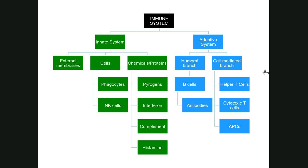Because some things are able to get inside of cells, we also need a cell-mediated branch of this system to go after those things that are hiding out in a cell. This is a basic introduction to the adaptive system — what it does and the fact that it has different branches. Next we'll cover some introductory information to help understand how the system works in general before getting into the specifics.